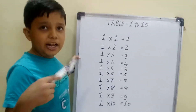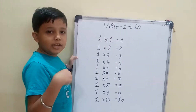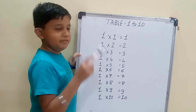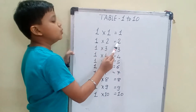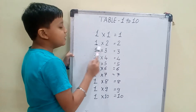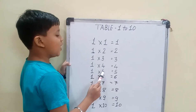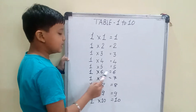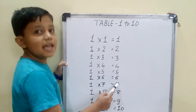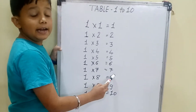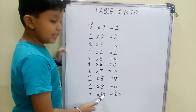Children, I will repeat this table one more time. Okay, you can speak with me. 1 one is 1, 1 two is 2, 1 three is 3, 1 four is 4, 1 five is 5, 1 six is 6, 1 seven is 7, 1 eight is 8, 1 nine is 9, 1 ten is 10.